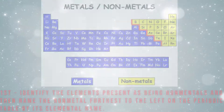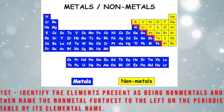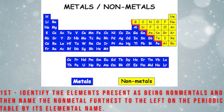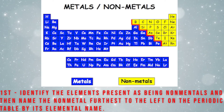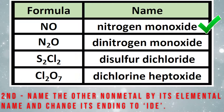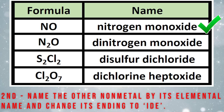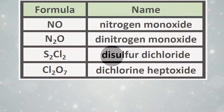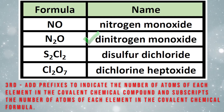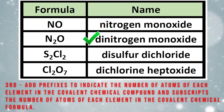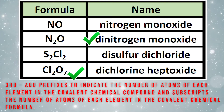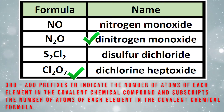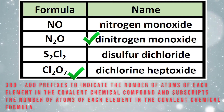First, you need to identify the elements present as being non-metals and then name the non-metal furthest to the left on the periodic table by its elemental name. Second, you need to name the other non-metal by its elemental name and change its ending to IDE. Third, you need to add the prefixes to indicate the number of atoms of each element in the covalent chemical compound and as subscripts for the number of atoms of each element in the covalent chemical formula.